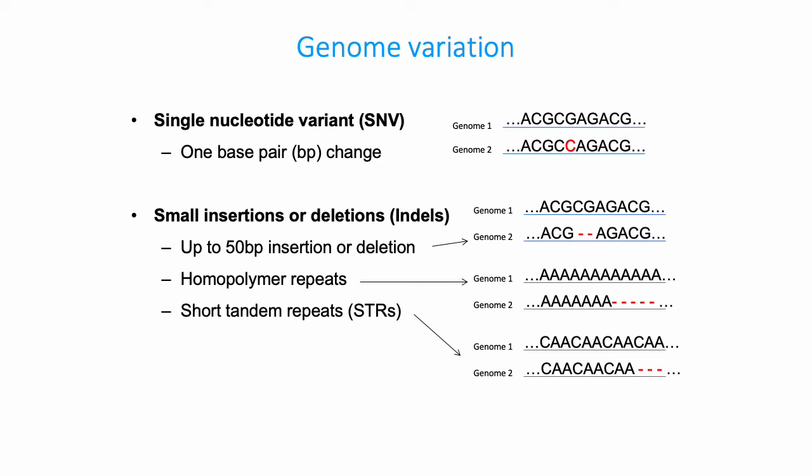This class in particular is going to focus on single nucleotide polymorphisms or SNPs, or more generally single nucleotide variants or SNVs. Those are basically variants where you see single base pair changes at a given position in the genome.